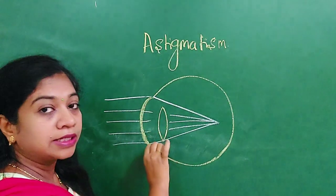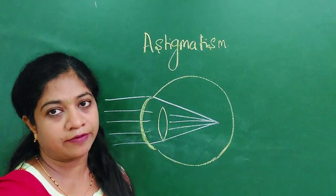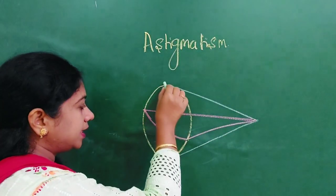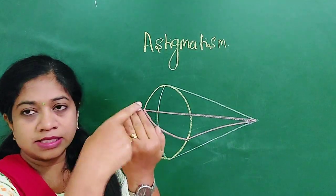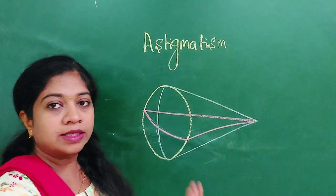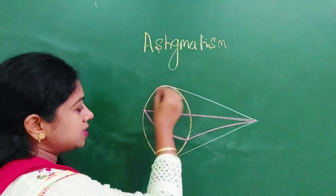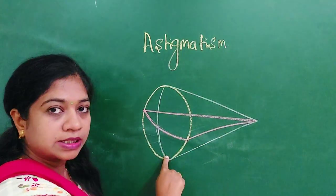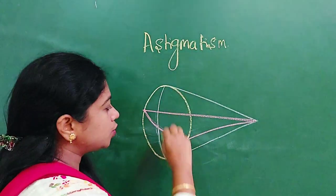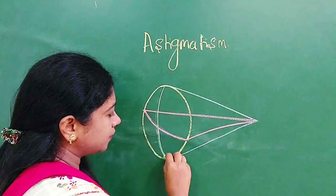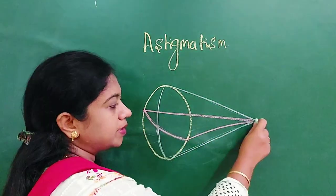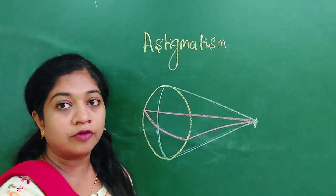Let's isolate the refracting surface and see how these rays behave. The whole area marked in yellow is the anterior surface of the cornea. The green line represents the vertical meridian, and the pink line represents the horizontal meridian. When the surface is spherical, these two meridians meet at a point. The refraction in the vertical meridian and the horizontal meridian both converge at the same point, hence forming a single focal point.